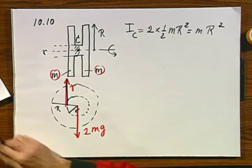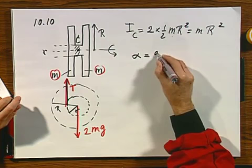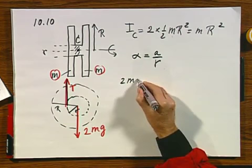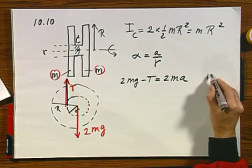Clearly, we have again alpha equals A over r, because we have pure roll, so we can use that wherever we want to. We're going to apply Newton's law. The system is going to be accelerated downwards, so two m g minus T must be two m a. That's equation number one.